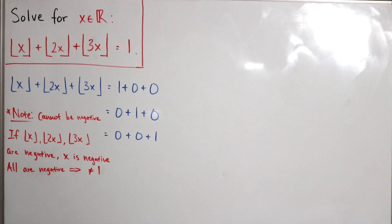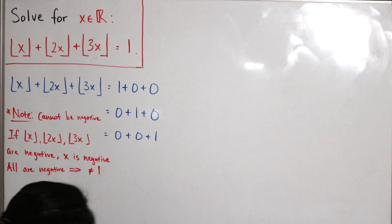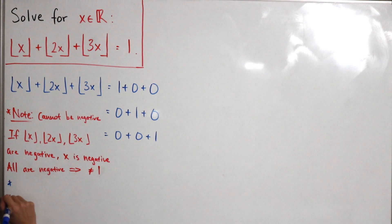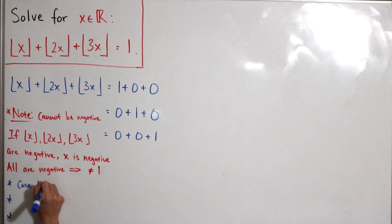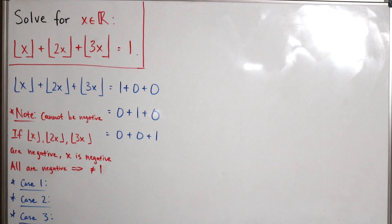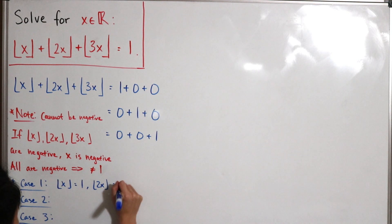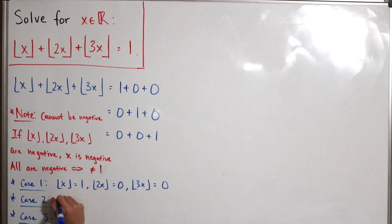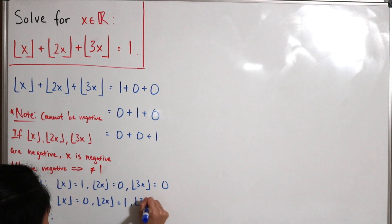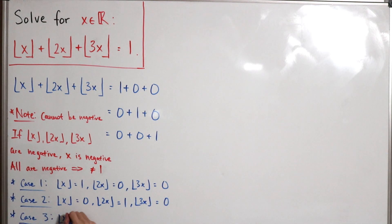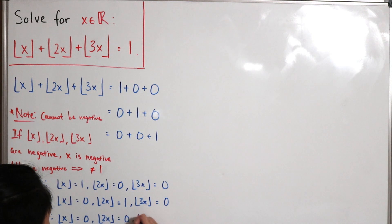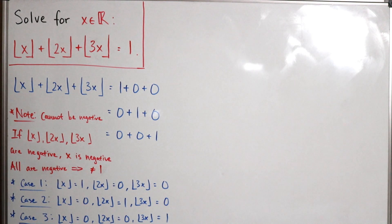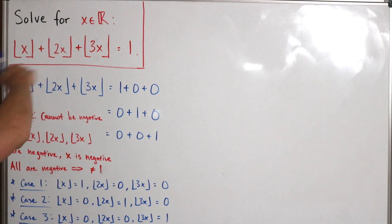We have three cases to analyze. Case 1: floor of x = 1, floor of 2x = 0, floor of 3x = 0. Case 2: floor of x = 0, floor of 2x = 1, floor of 3x = 0. Case 3: floor of x = 0, floor of 2x = 0, floor of 3x = 1. Hopefully from these cases we will find the interval of real x satisfying the equation.